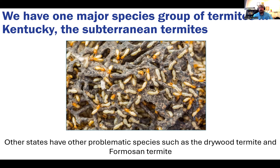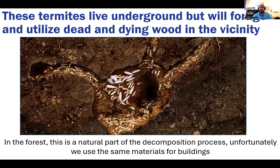We lump the subterranean termites together because they behave very similarly. If you go further south into more tropical states like Florida, Louisiana, Alabama, and Mississippi, they have problems with drywood termites, which can exist in drier wood without the aid of mud, and become a much bigger problem. They also have Formosan termites, whose soldiers can shoot acid from their heads. We don't have those here in Kentucky — no colony has been located within the state.